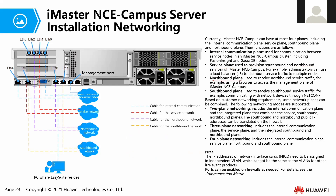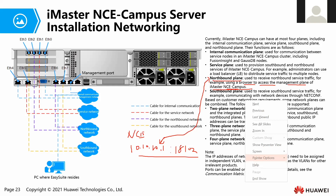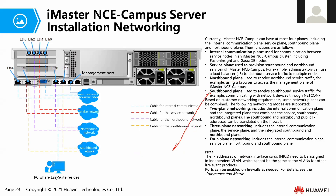The next plane is the northbound plane. The northbound plane is basically the plane which we use to browse or access the management portal of NCE Campus. When we access NCE Campus, we type in the IP address — for example, 10.10.1 with port 18102 — so this IP which we use to access the management of NCE is under the northbound plane. The northbound IP is used to access NCE Campus itself.